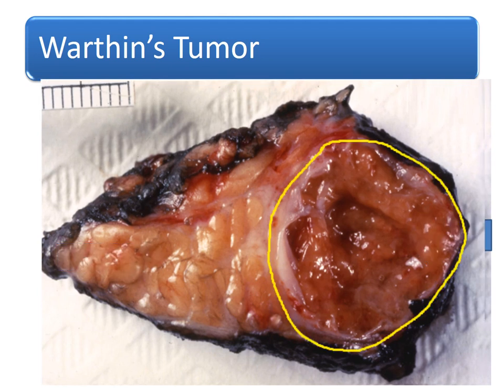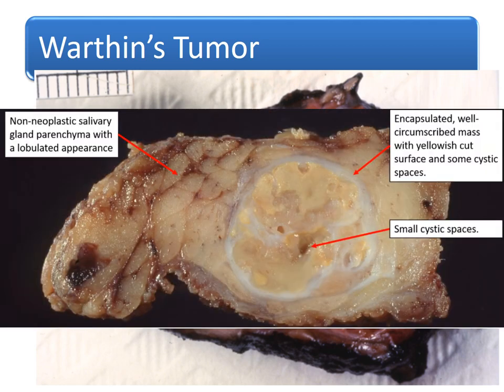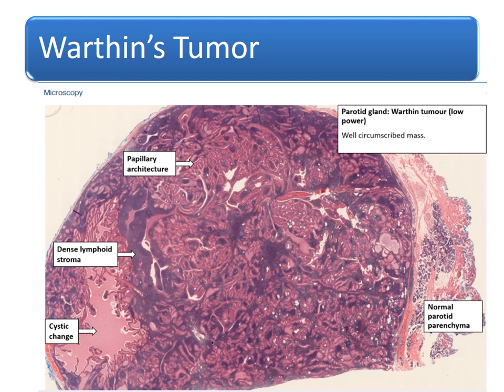Here is the normal gland, the circumscribed capsule, and the cystic spaces inside the tumour. Another specimen shows small cystic spaces in an encapsulated, well-circumscribed mass with non-neoplastic salivary gland outside. In the microscopic appearance of Warthin's tumour, you can see lymphoid stroma and cystic spaces lined by papillary projections lined by columnar epithelium — papillary architecture, dense lymphoid stroma, cystic spaces, and a well-encapsulated mass.